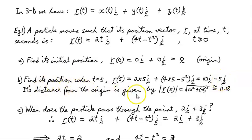Its distance from the origin is given by the absolute value of the modulus of the vector at this point in time. So the absolute value of the modulus of the position vector at t = 5 is the square root of 10² + (-5)². That is approximately 11.18 units.